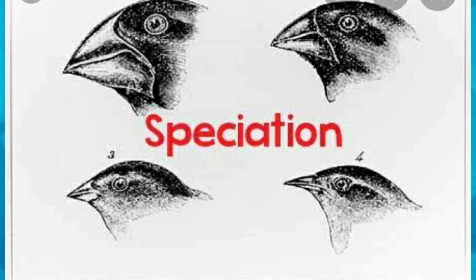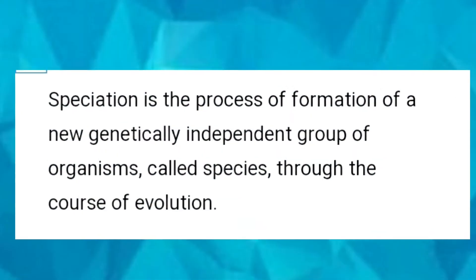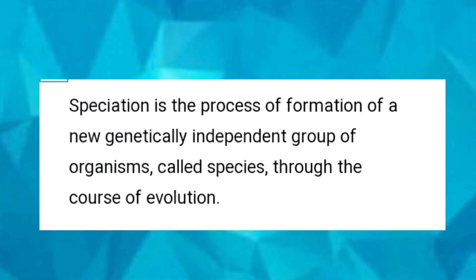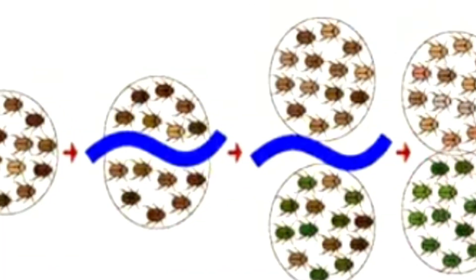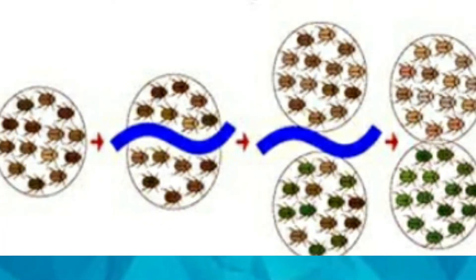What is speciation? Speciation is the process of formation of a new genetically independent group of organisms called species through the course of evolution. The process of splitting of a genetically homogeneous population into two or more populations that undergoes genetic differentiation and eventually reproductive isolation is called speciation.